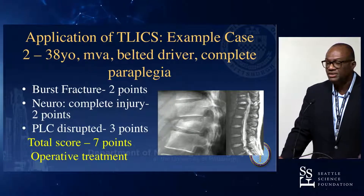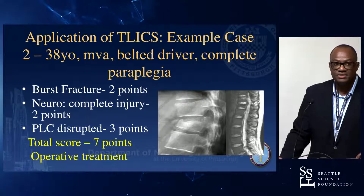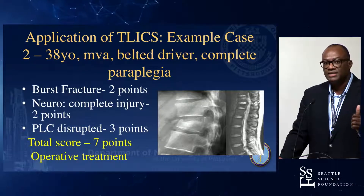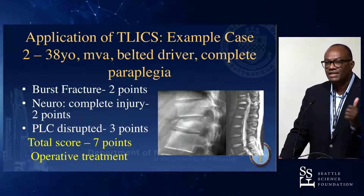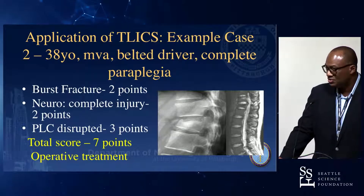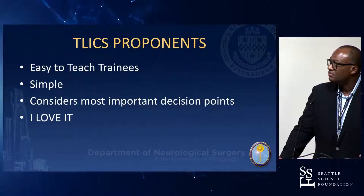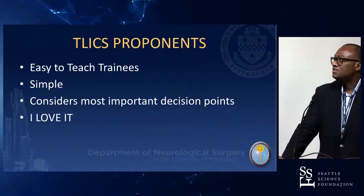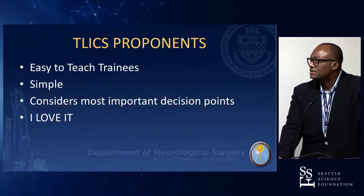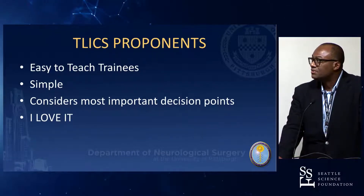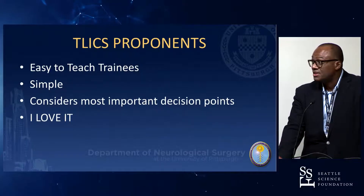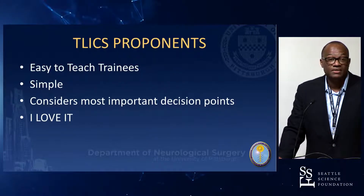But literally there are avenues where you have to seriously consider both the qualifiers — which I always say is your ticket. That's where you need to decide if this person is going to do well. Why do I like it? It's easy to teach residents and fellows. It's simple, it considers most important decision points. And simply, I love it. When I was a resident, the AO classification system was out — 64 points to torture me. I didn't think it was a good idea.